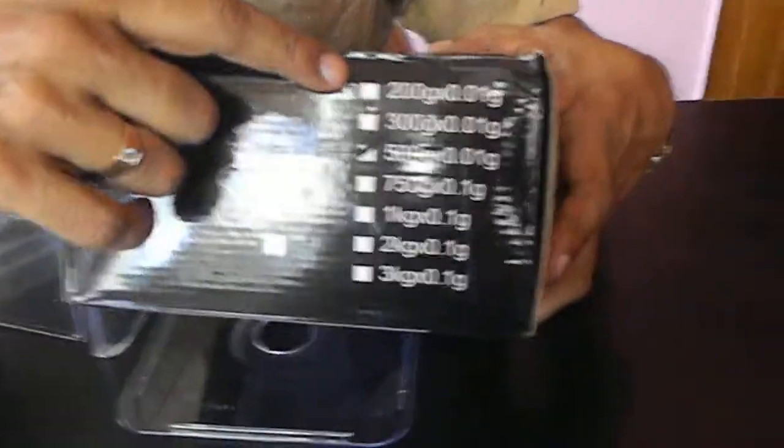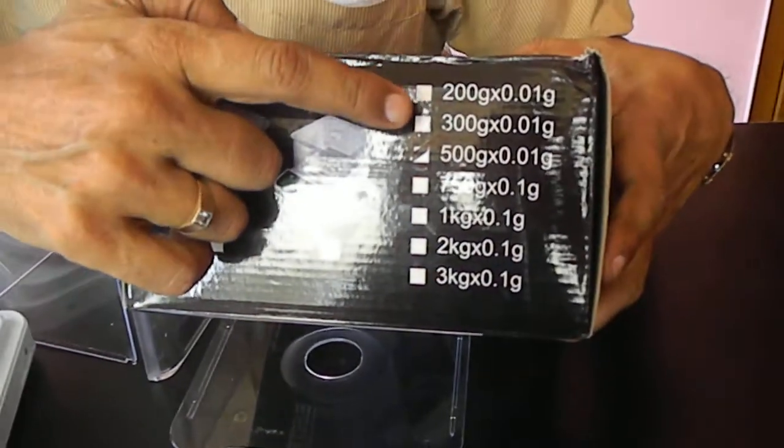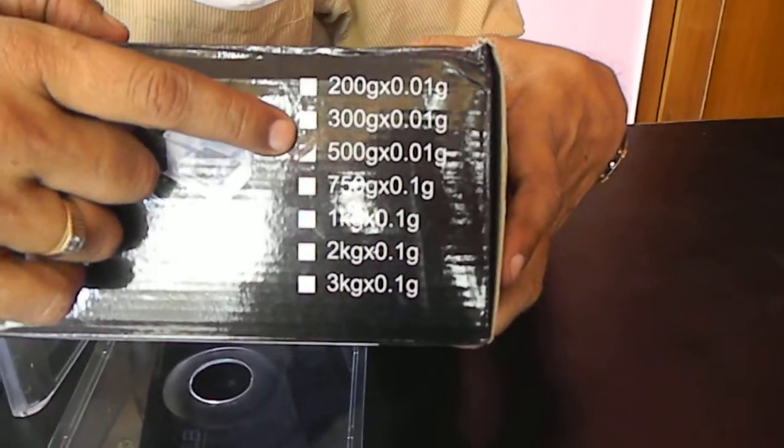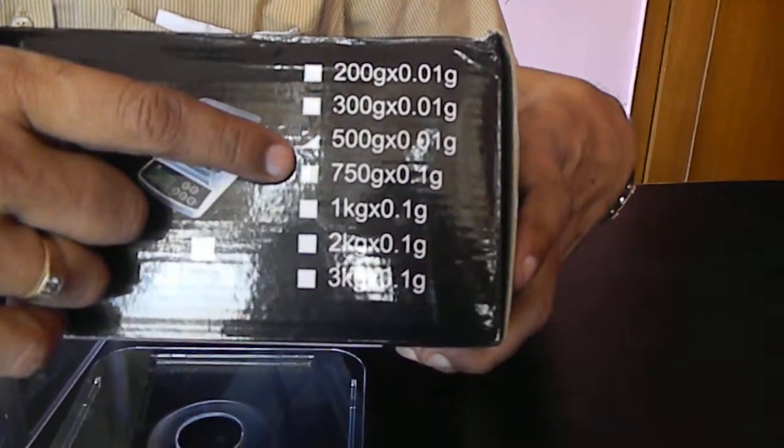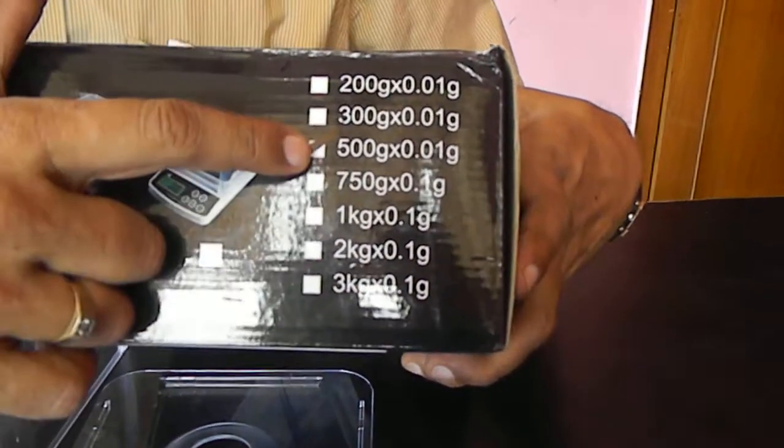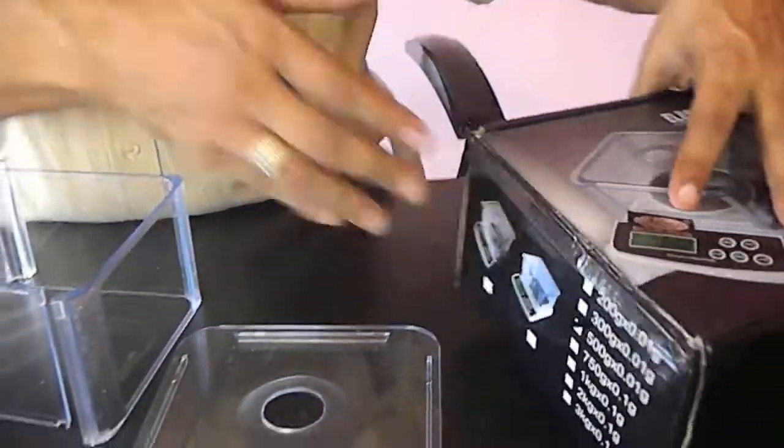200g, 100mg, 300g, 10mg, 500g, 10mg, 750g, 100mg, 1kg, 2kg. All these are with 100mg. It has an air shield.